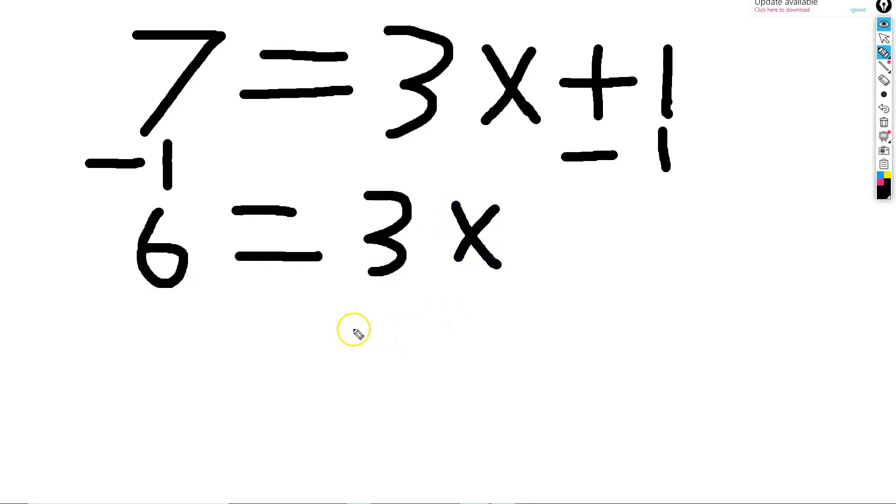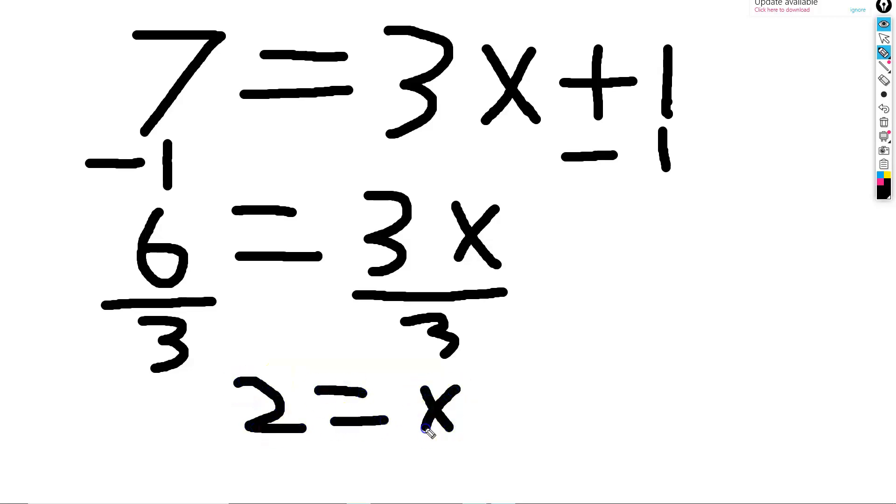Then, we found 1 third of both sides of each other. Another way to find 1 third is to divide by 3. This left us with 2 equals x.